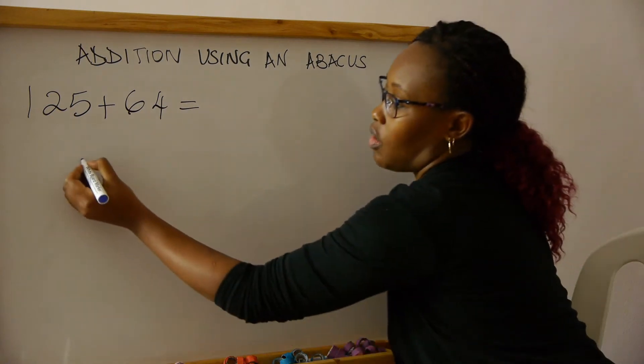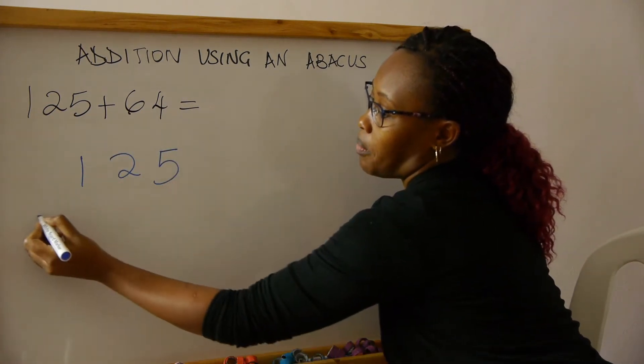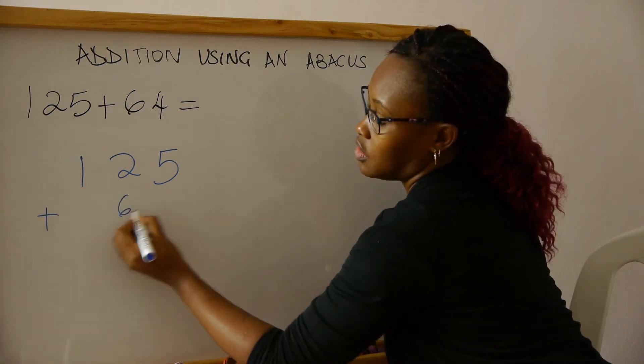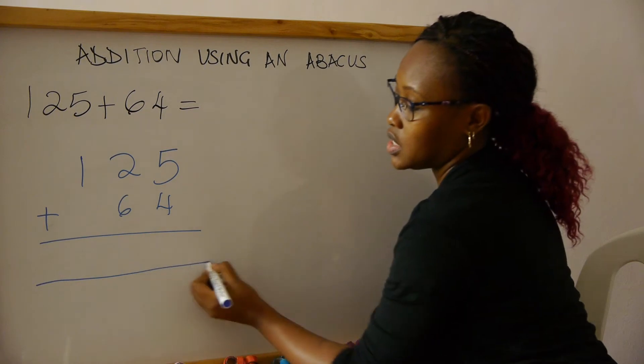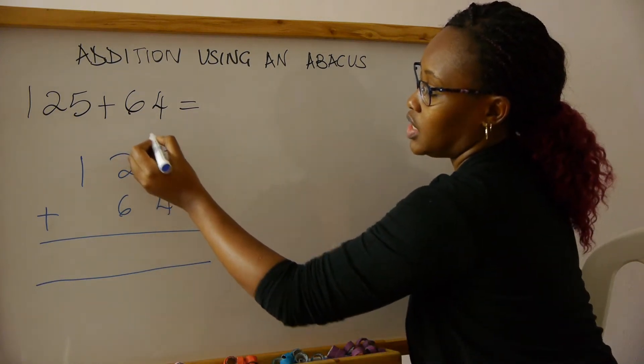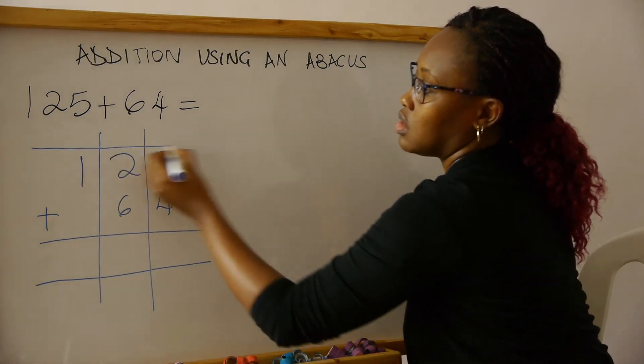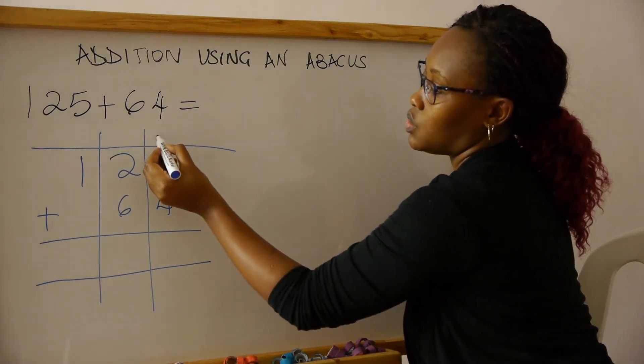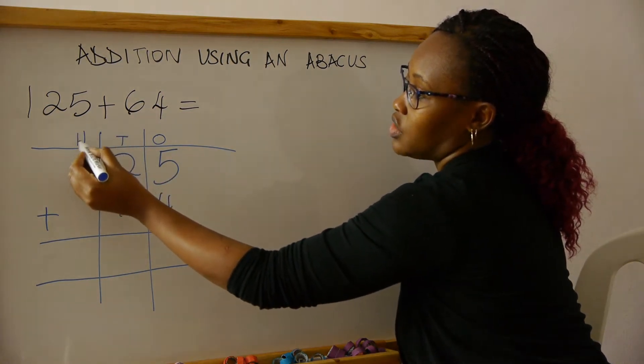Which is 125 plus 64. Be very careful how you place the numbers. We divide them so that we know our place values: this is ones, this is tens, and this is hundreds.